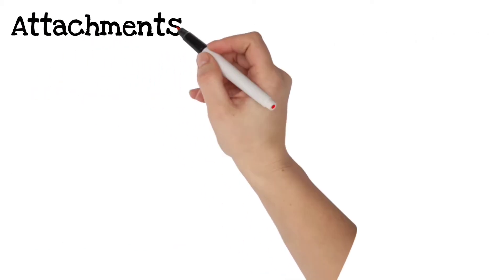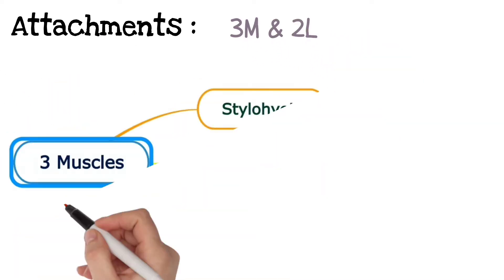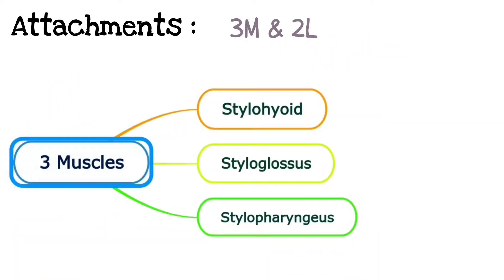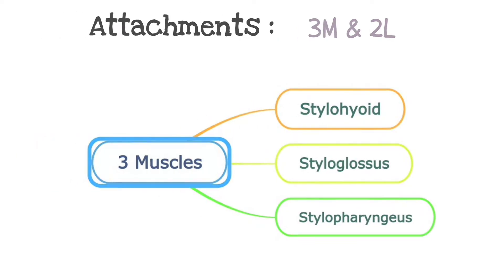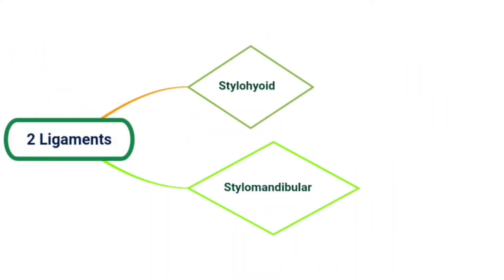Attachments. The structures attached to the process are three muscles and two ligaments. The muscles are stylohyoid, styloglossus, and stylopharyngeus. The ligaments are the stylohyoid and stylo-mandibular ligaments.